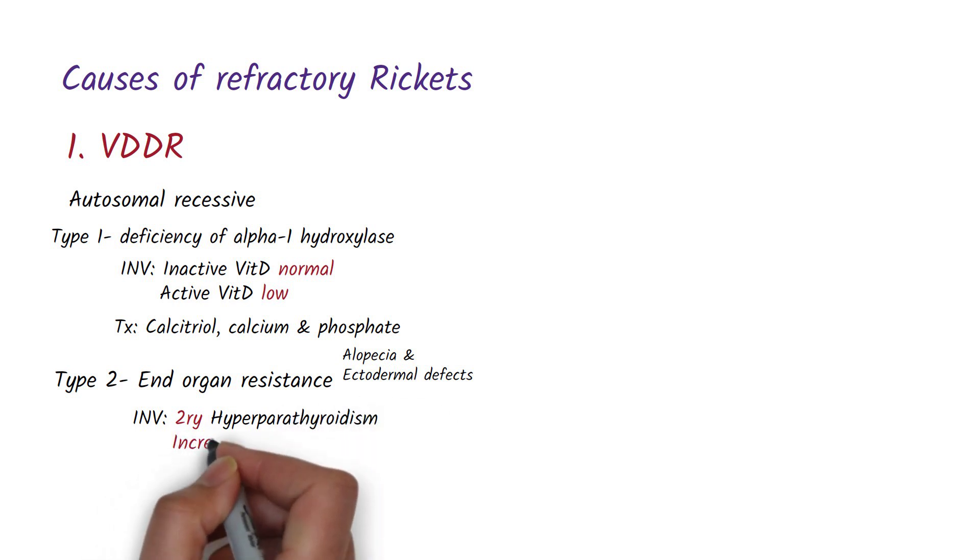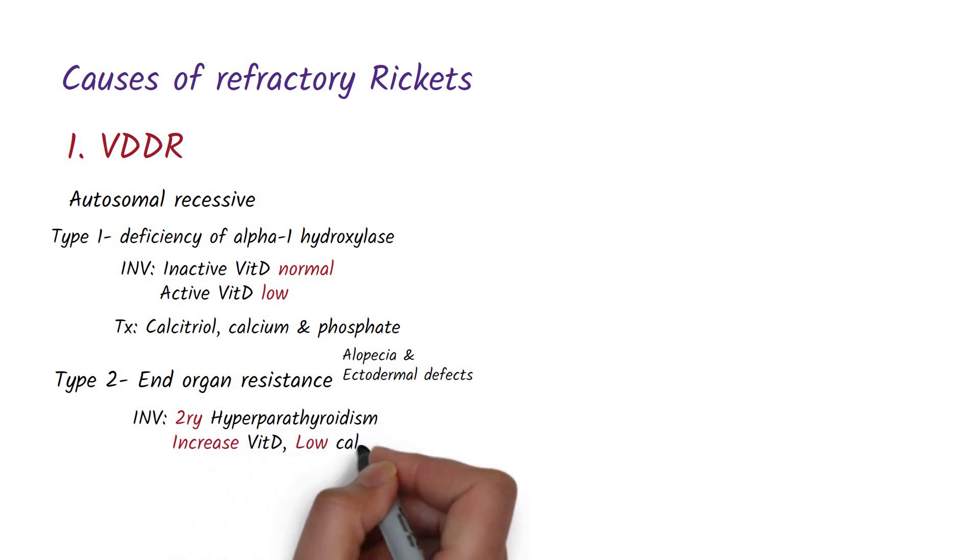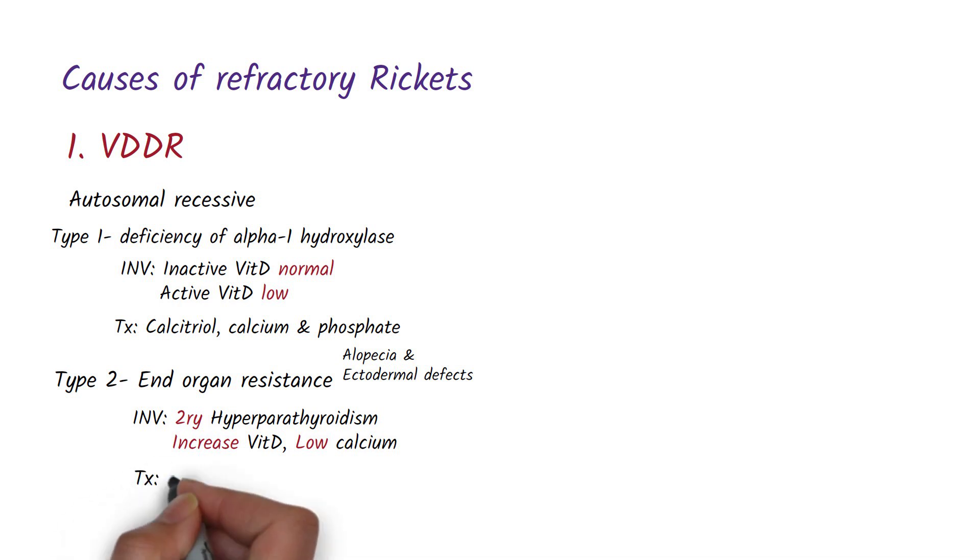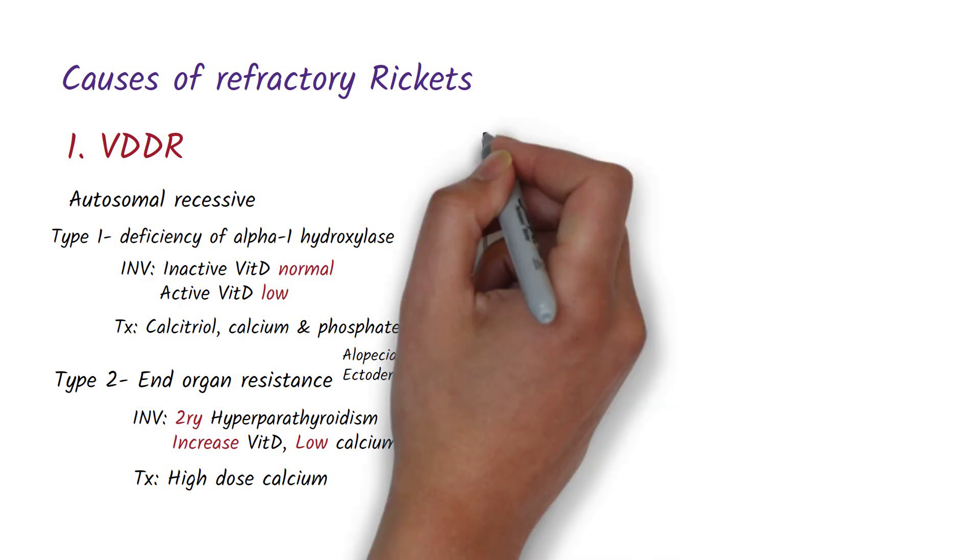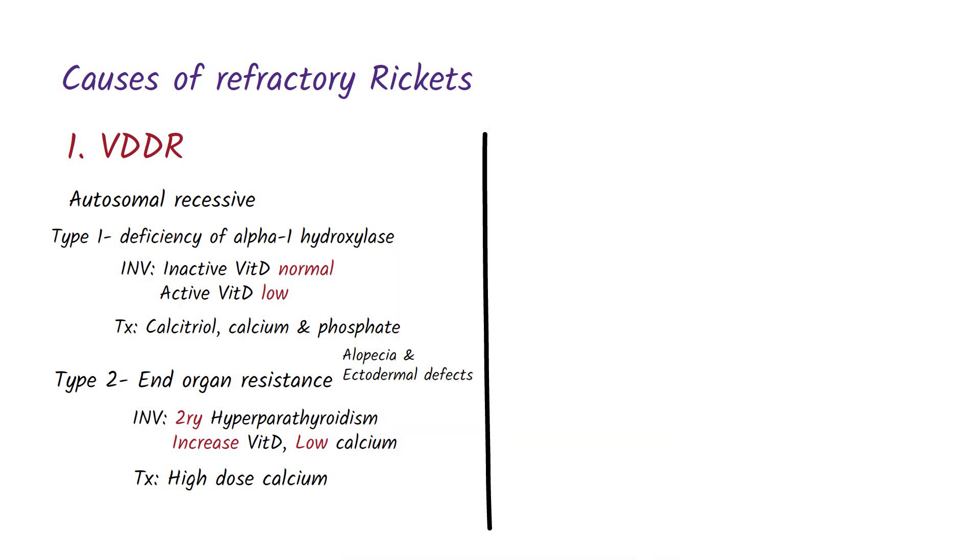Because there is an elevated vitamin D3 level but calcium levels are low due to a secondary cause which is end organ resistance, so the treatment of vitamin D dependent rickets type 2 is with high doses of calcium for a prolonged period of time.